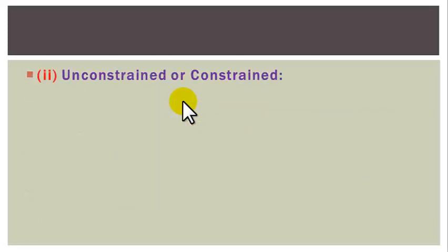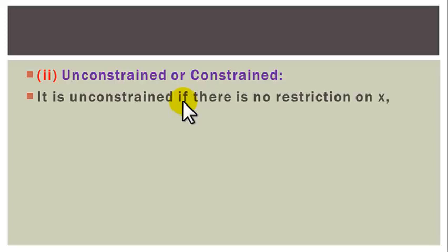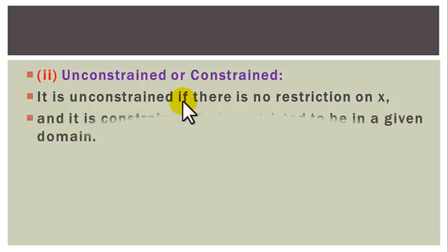Two: it can be classified as unconstrained or constrained. It is classified as unconstrained if there is no restriction on x, while it is classified as constrained if x is restricted to be in a given domain.